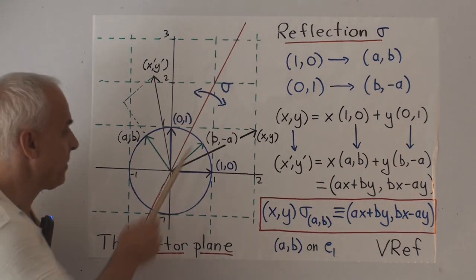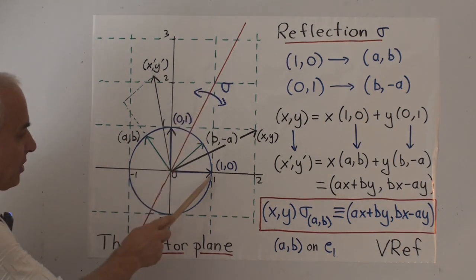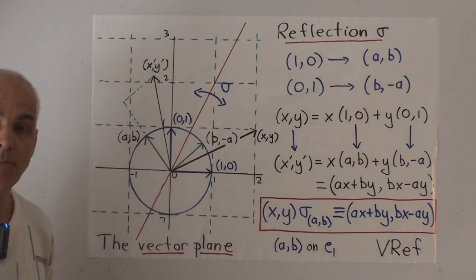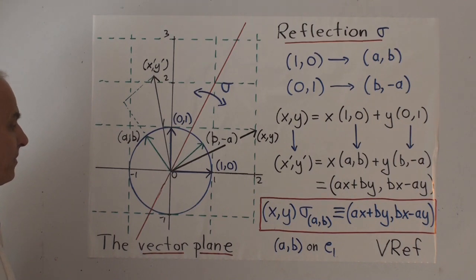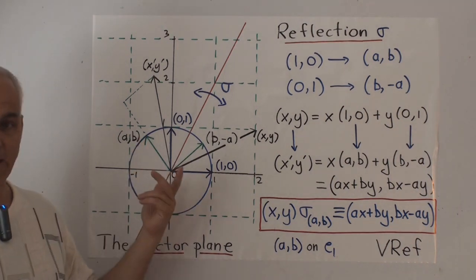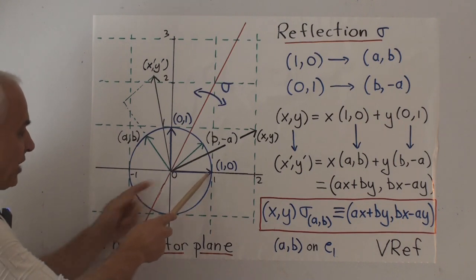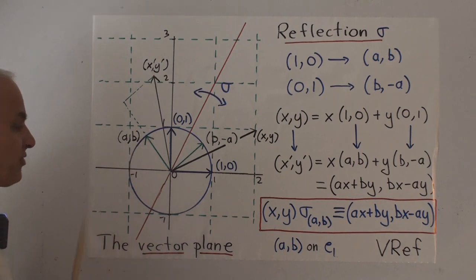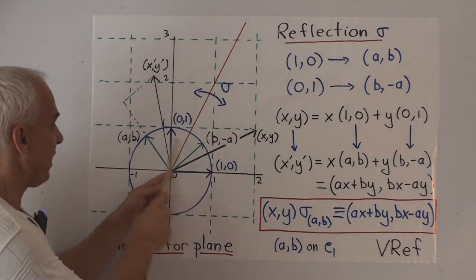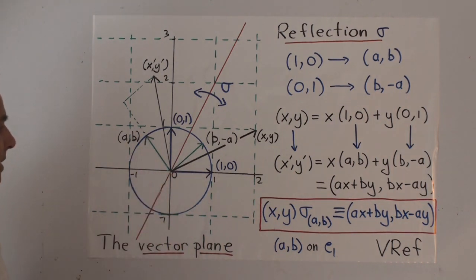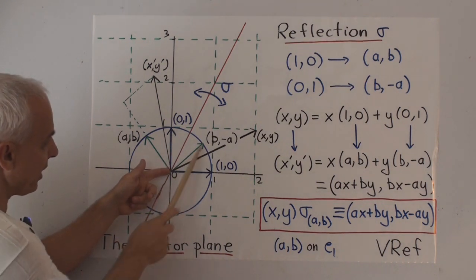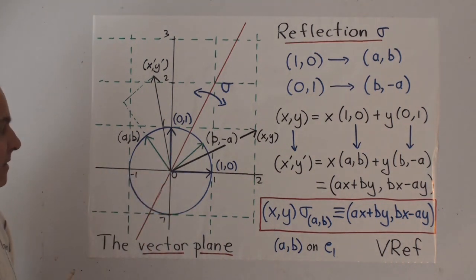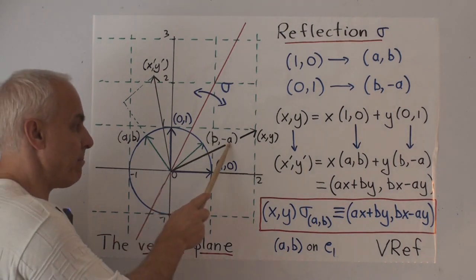So let's suppose that our reflection in this line sends the vector 1,0 to an arbitrary vector AB. Our reflection is going to maintain lengths or maintain quadrances. So that new vector is also going to lie on the unit circle. Let's call that arbitrary point AB. So that vector is going to go to a vector AB. And the other vector, 0,1, is going to go to a vector like this, which is going to be perpendicular to the vector AB. And it's going to be the vector B minus A. These two vectors are perpendicular.